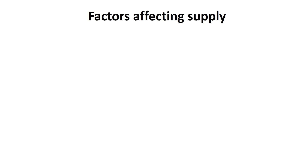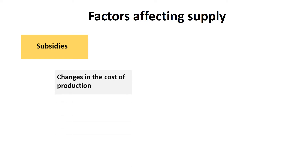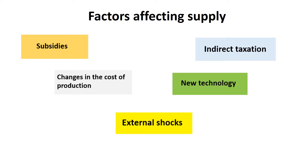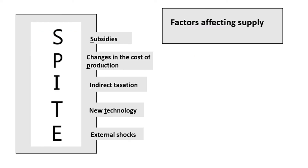These are the factors affecting supply: subsidies, changes in the cost of production, indirect taxation, new technology, and external shocks. A good way to remember the factors affecting supply is to remember the word SPITE. The S stands for subsidies, the P for changes in the cost of production, the I for indirect taxation, the T for new technology, and the E for external shocks.